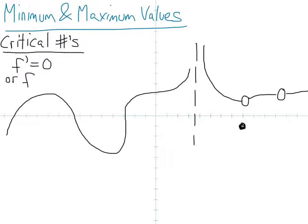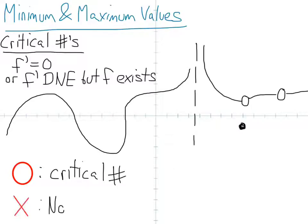And critical numbers are where f prime is equal to 0, which most people remember, but the second definition of a critical number is where f prime doesn't exist, but the function exists. So let's just look at this graph we've drawn here. Let's circle in red the things that are critical numbers and put a little x over what's not a critical number.